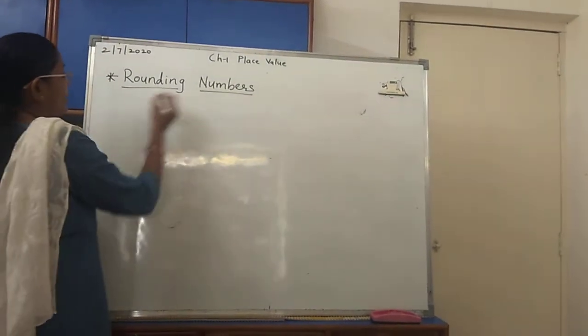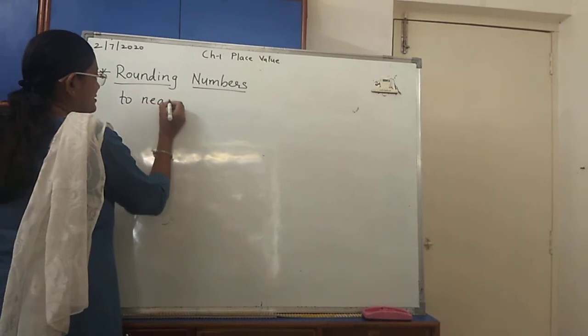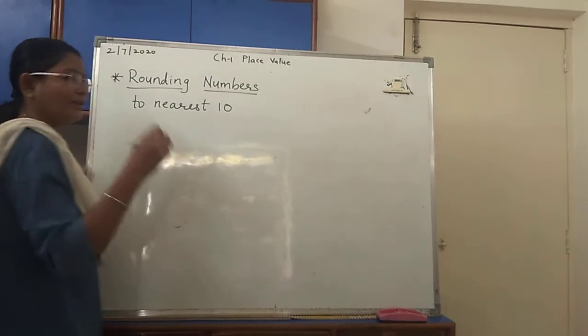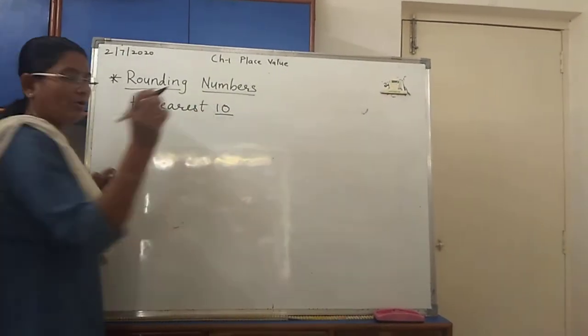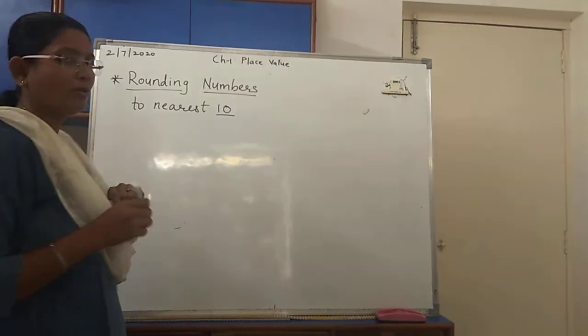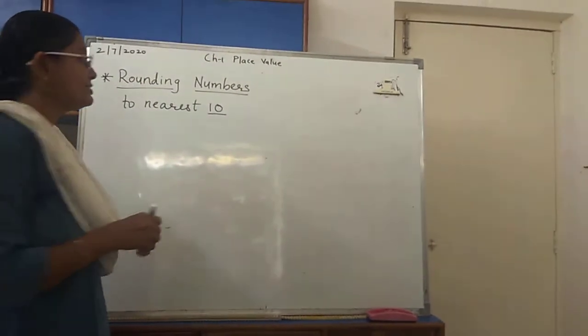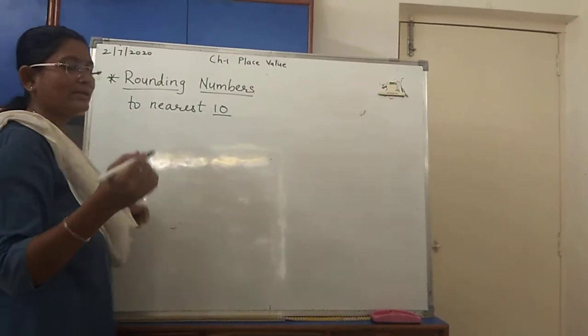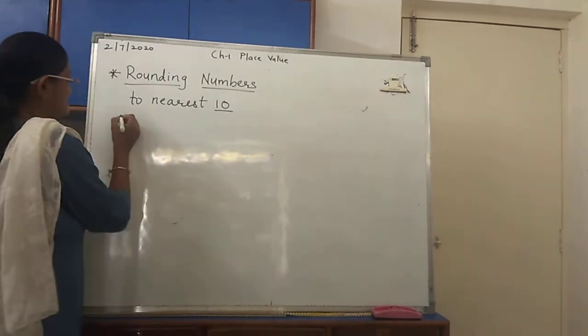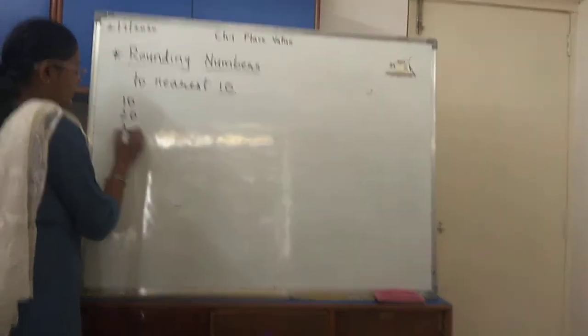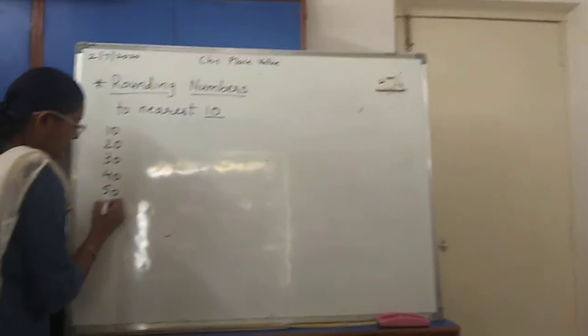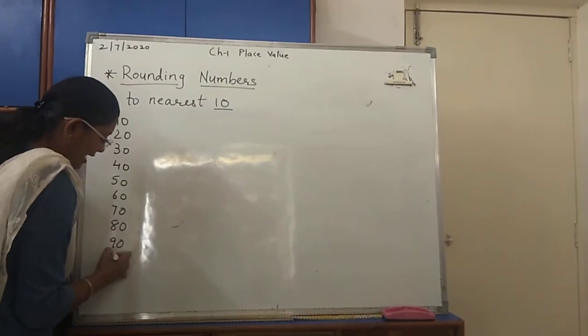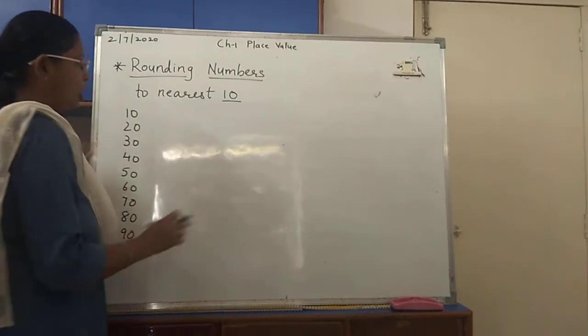Now if we talk about rounding up to the nearest 10s. Today we will learn about nearest 10 also and nearest 100 also. Just now I am explaining about nearest 10. First of all it is nearest 10, so you have to remember the multiples of 10. Multiples of 10 means the answer of 10 table. That is, what is 10s? 10, 20, 30, 40, 50, 60, 70, 80, 90, and 100. These are called 10s.